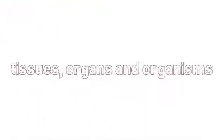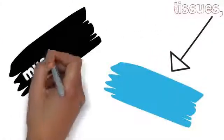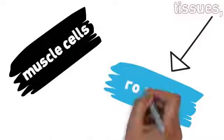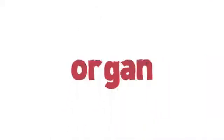Following on from the cell we have tissues, organs and organisms. A tissue is made up of the same type of cell. For example you can have tissue of muscle cells or tissue of root cells. They are all the same and they all do the same job.